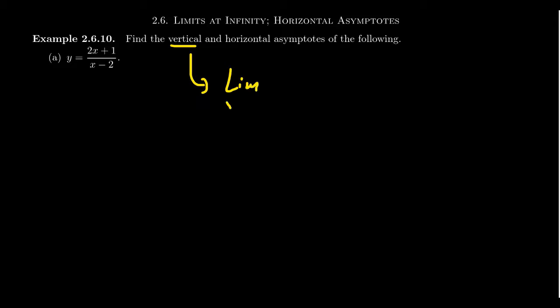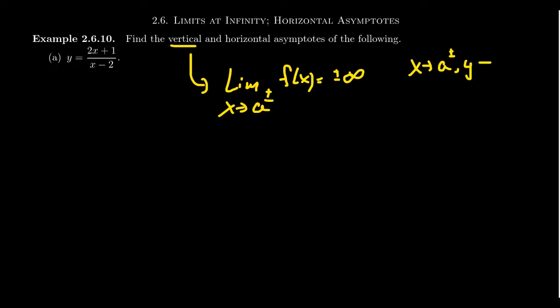When one is talking about a vertical asymptote, we take the limit as x approaches some finite number a — either from the right or from the left, or both sides. We take the limit as x approaches a of f of x, and this limit turns out to be plus or minus infinity. So as x approaches a finite number, y approaches plus or minus infinity. That is what describes a vertical asymptote using the language of limits.